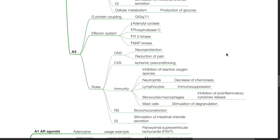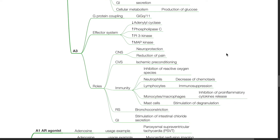A3 adenosine receptors: G-protein coupling is to Gi or Gq11. Effector system is via reduced adenylyl cyclase, increased phospholipase C, PI3 kinase, and MAP kinase. Activation of A3 produces neuroprotection and reduction of pain in the CNS, and ischemic preconditioning in the heart. In the immune system: inhibition of reactive oxygen species, decreased chemotaxis in neutrophils, immunosuppression amongst lymphocytes, inhibition of pro-inflammatory cytokine release from monocytes or macrophages, and stimulation of degranulation from mast cells. There is bronchoconstriction in the respiratory system and stimulation of intestinal chloride secretion in the GI tract.